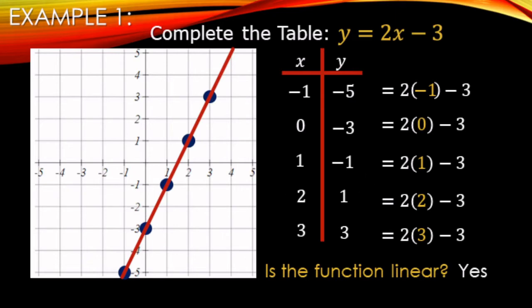The reason we're going over this is because the equation, the table, and the graph all have the exact same relationship. The difference is this table only has 5 data points, whereas the equation can give us any number of them. If we kept the line going up or down, we'd have more solutions with that same 2x - 3 relationship. We're connecting the equation, the table, and the graph, and also identifying whether the function is linear or not.